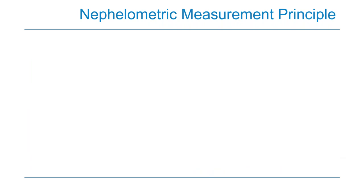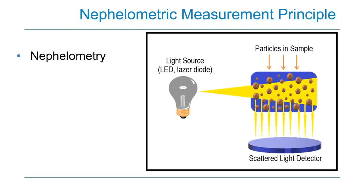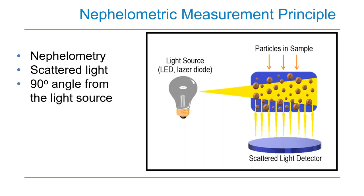Turbidity measurement uses nephelometry — from the Greek 'nephaly' for cloud — where light of an appropriate wavelength is sent through a sample and the intensity is detected at an angle from the incident beam. We're not measuring attenuation; rather, we measure scattered light at a 90-degree angle from the incident beam, which is considered the least sensitive to variations in particle size. The 90-degree incidence angle is included in the primary measurement methods both in the US as part of EPA Method 180.1 and in Europe as ISO 7027.